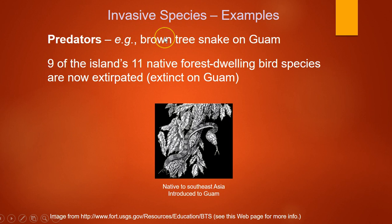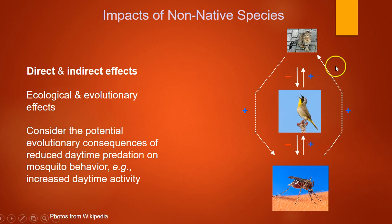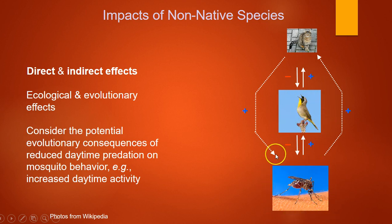Another invasive predator example is the brown tree snake in Guam, which caused many bird species to go extinct on the island. Island species often haven't evolved with predators, so they're not very scared of them. The kakapo in New Zealand is a ground-dwelling bird that gets eaten by dogs and cats because it's simply not afraid. Indirect effects matter too: cats eat songbirds, but fewer songbirds means more mosquitoes. Similarly, white nose syndrome kills bats, and fewer bats also means more mosquitoes.